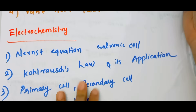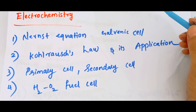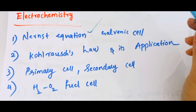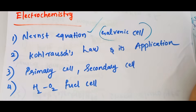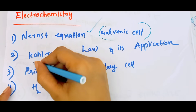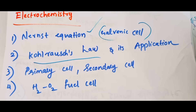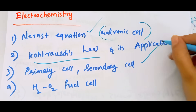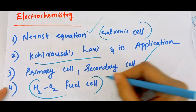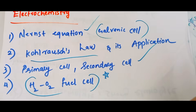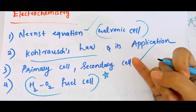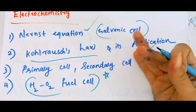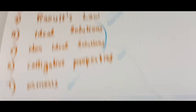This is the chapter of Electrochemistry. In that, I will learn the representation of galvanic cells, the application of Kohlrausch's law. What are primary cells and secondary cells? I will learn examples — H2O2 fuel cells are very important. Anode reaction, cathode reaction, and working — that is very important.